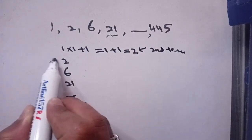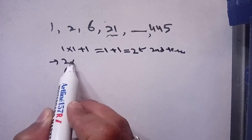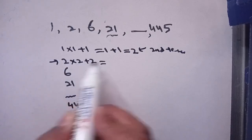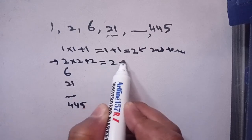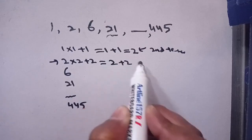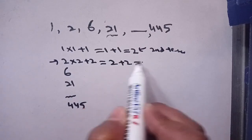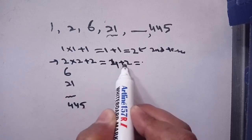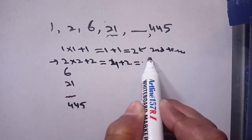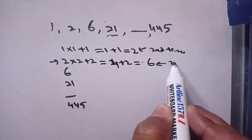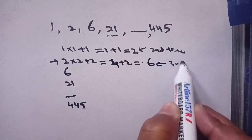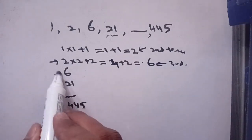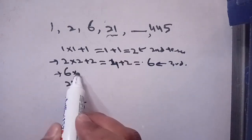Now take the second term: multiply it by 2 and add 2. It becomes 2 times 2 equals 4, and plus 2 equals 6. This is our third term.